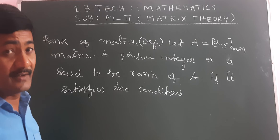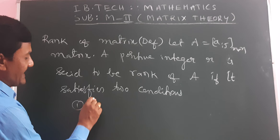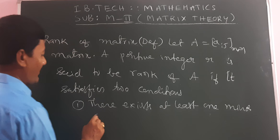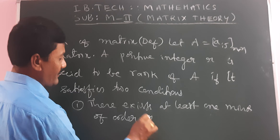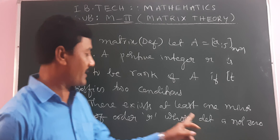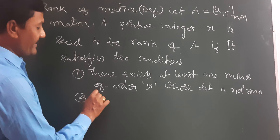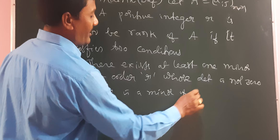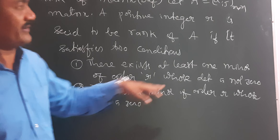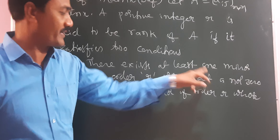The first condition is: there exists at least one minor of order R whose determinant is not zero. The second condition is: every minor of order R+1 whose determinant is zero. So there are two important conditions — there exists at least one minor of order R whose determinant is not zero, and every minor of order R+1 has determinant zero.